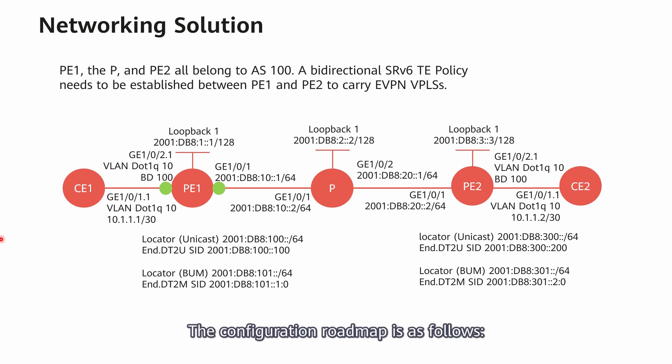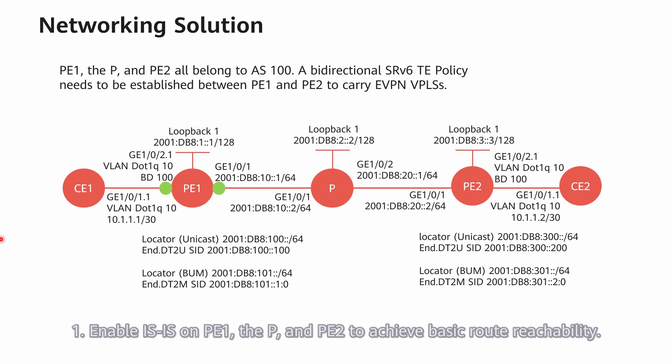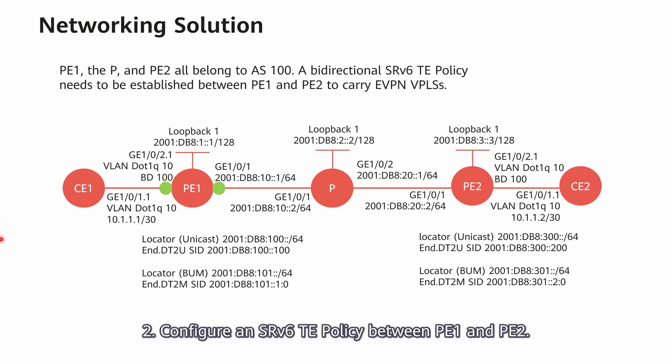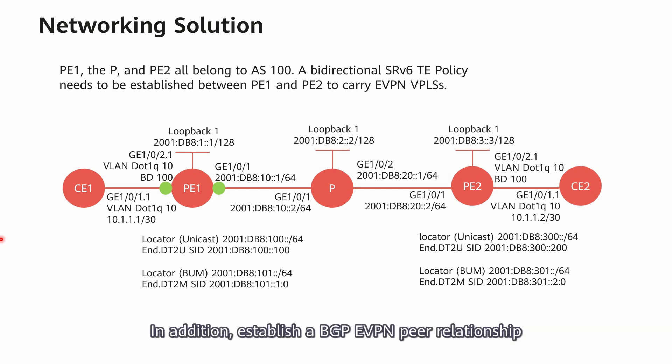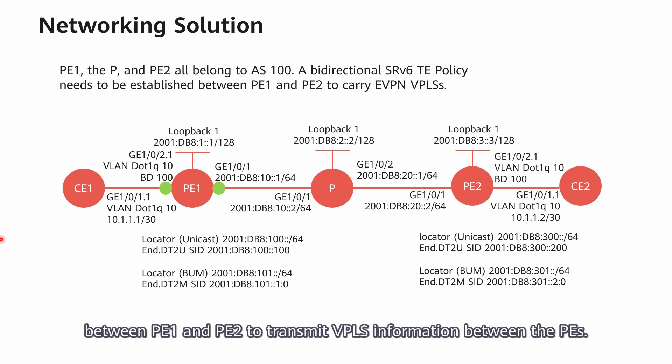The configuration roadmap is as follows. First, enable IS-IS on PE1, the P, and PE2 to achieve basic router reachability. Second, configure an SRv6 TE policy between PE1 and PE2. Third, configure CE access on PE1 and PE2. In addition, establish a BGP-EVPN peer relationship between PE1 and PE2 to transmit VPLS information between the PEs.